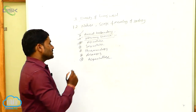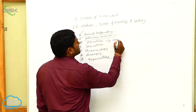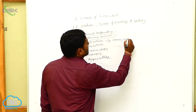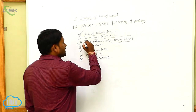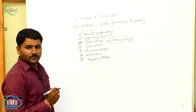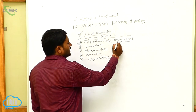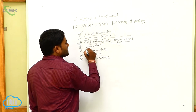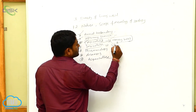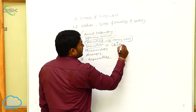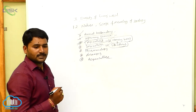The culturing of honey bees for the production of honey is called Apiculture. Next, the rearing of silkworms is called Sericulture.